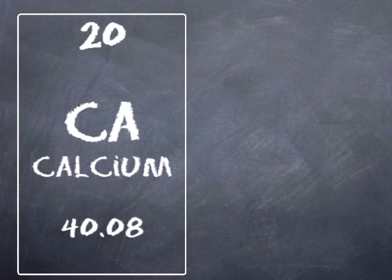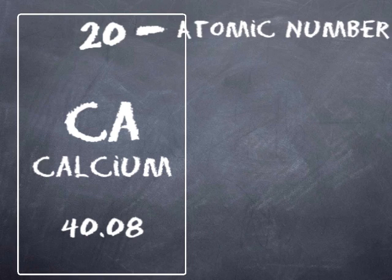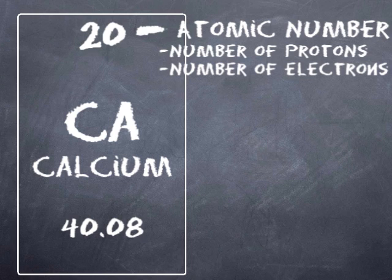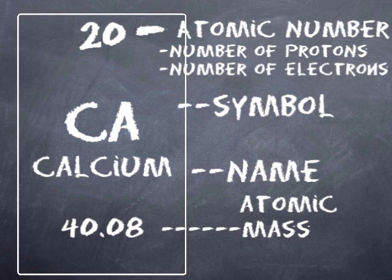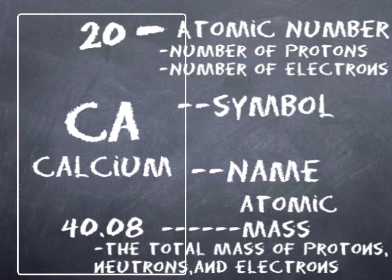This is calcium on the periodic table of elements. 20 is the atomic number, which is the number of protons and the number of electrons in the atom. Ca is the symbol, and calcium is the name of the element. 40.08 is the atomic mass, which is the total mass of protons, neutrons, and electrons in an atom.